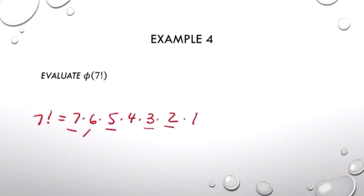And we notice that 7, 5, 3, and 2 are already primes. So we just have to factor the 6 and the 4 and collect up terms. And that is 2 to the fourth times 3 squared times 5 times 7.